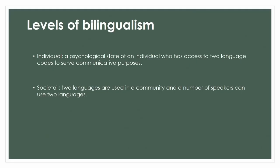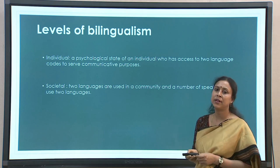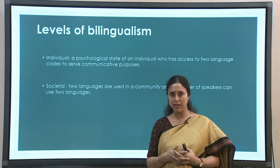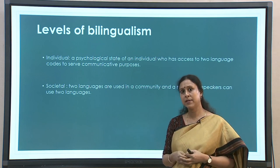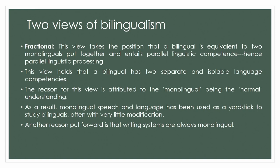There are many other ways of looking at bilinguals. Individual bilingualism is a psychological state of an individual who has access to two different codes for communicative purposes. On the other hand, societal bilingualism — also called social bilingualism — is when two languages are used side by side in a community for many purposes, formal and informal. So languages live side by side in the society, that is societal bilingualism.